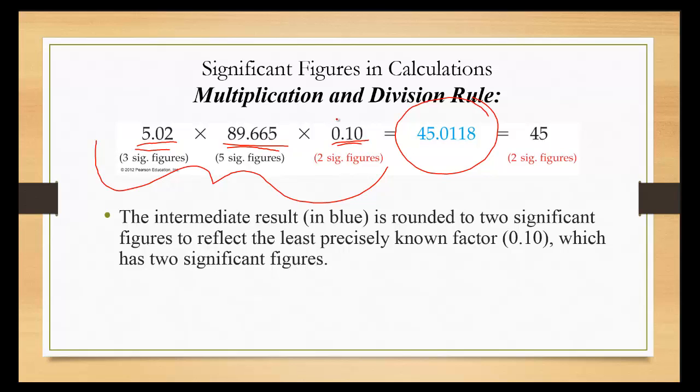Notice, the first zero is a leading zero, so it does not count. The last zero is a trailing zero, but it has a decimal, so it does count. With a decimal, it counts. Without a decimal, it does not. I have three significant figures in the first one, five in the second one, and two in the last. You pick the number with the fewest.